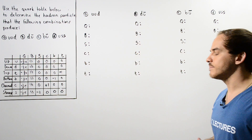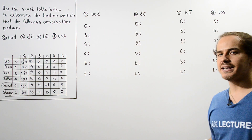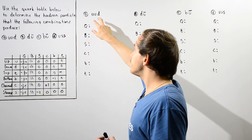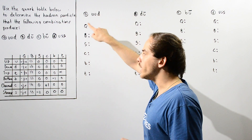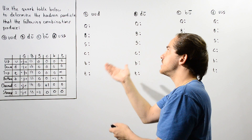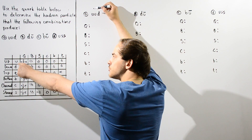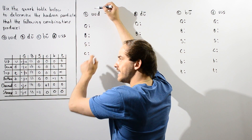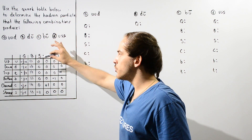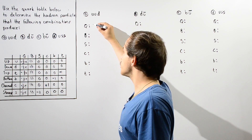Let's begin with A. In A, we have three different quarks that we are combining, and that means this must be a baryon. We have two up quarks and one down quark. Let's begin by determining what the total charge is on this particular baryon. The up quark has a charge of two-thirds, while the down has a charge of negative one-third. So positive two-thirds multiplied by two minus one-third gives us a charge of one.